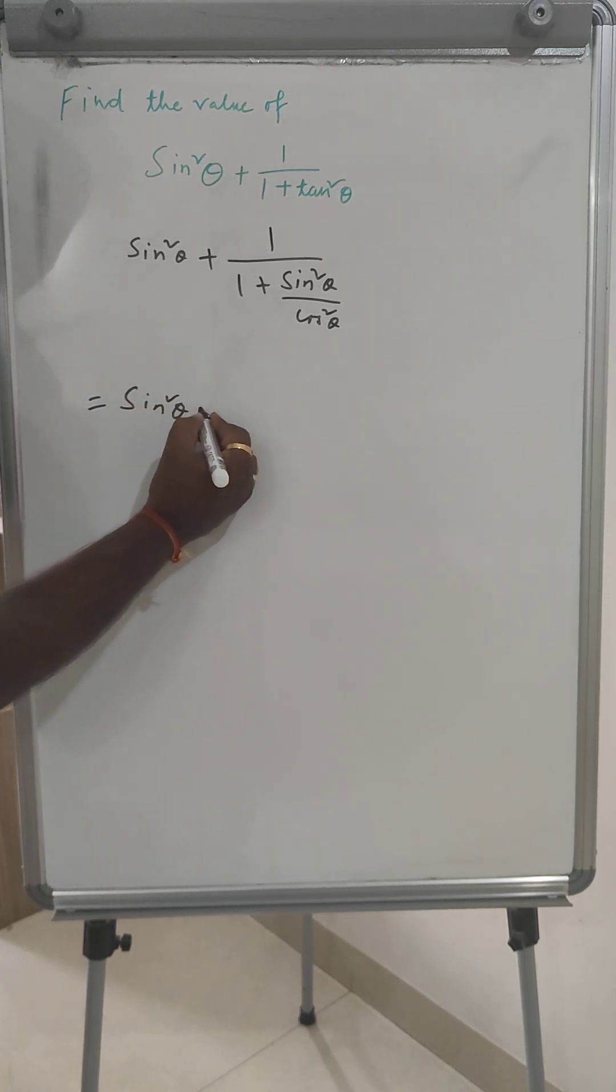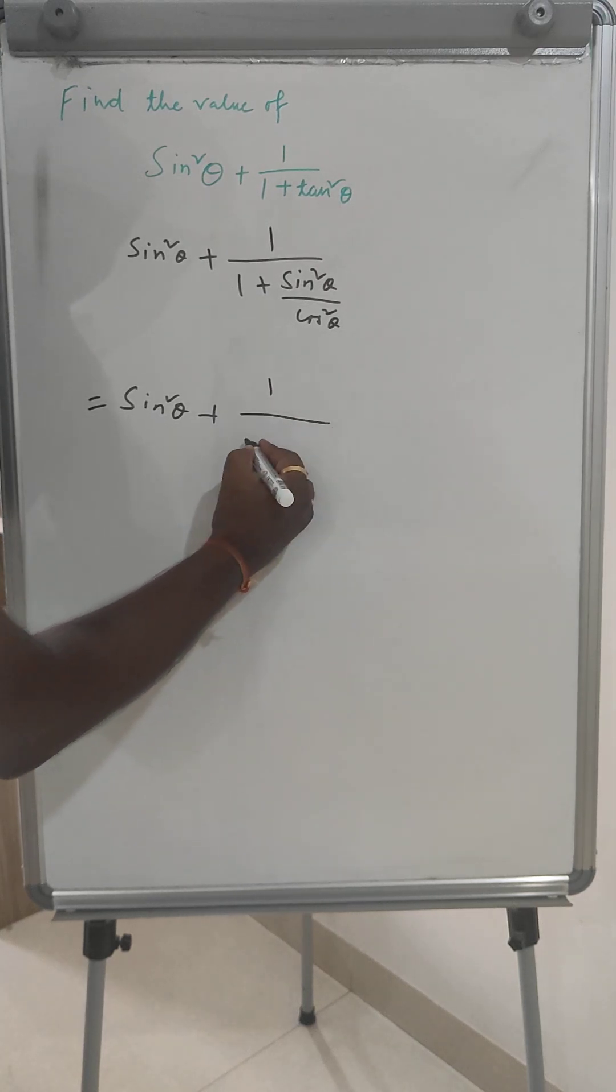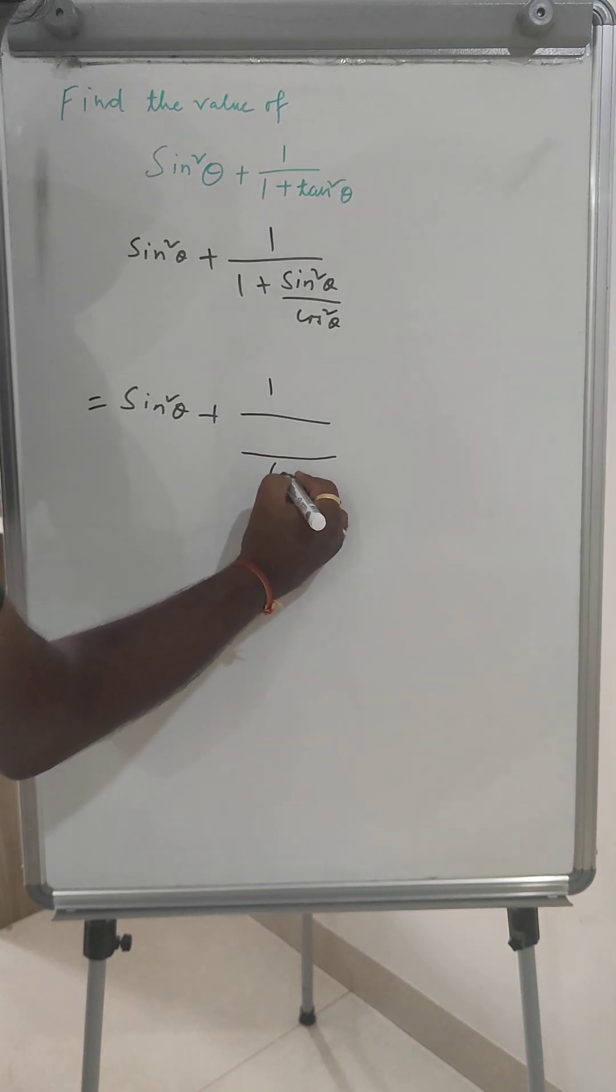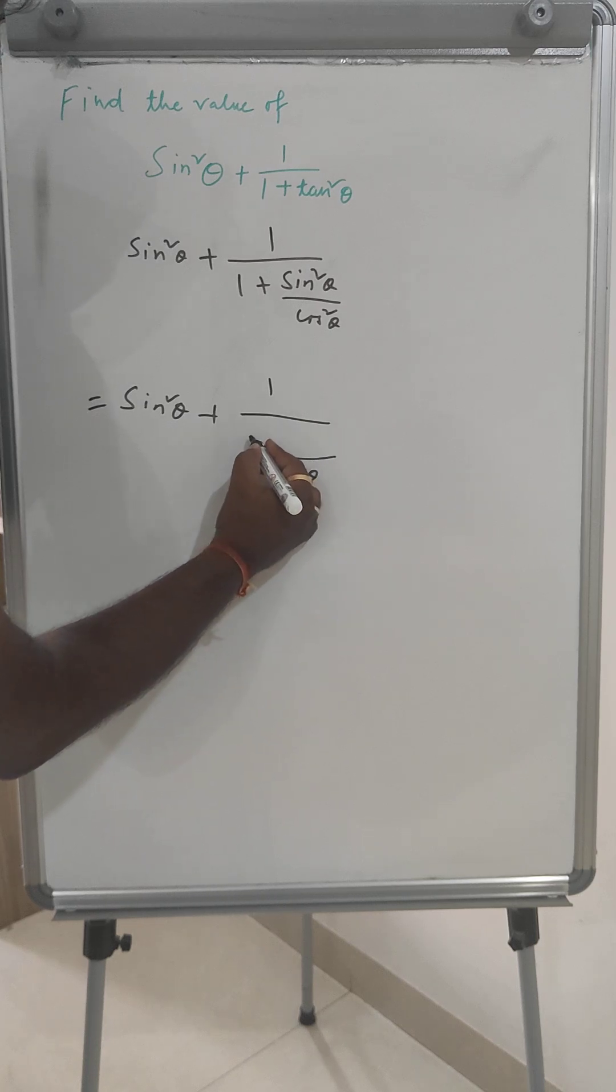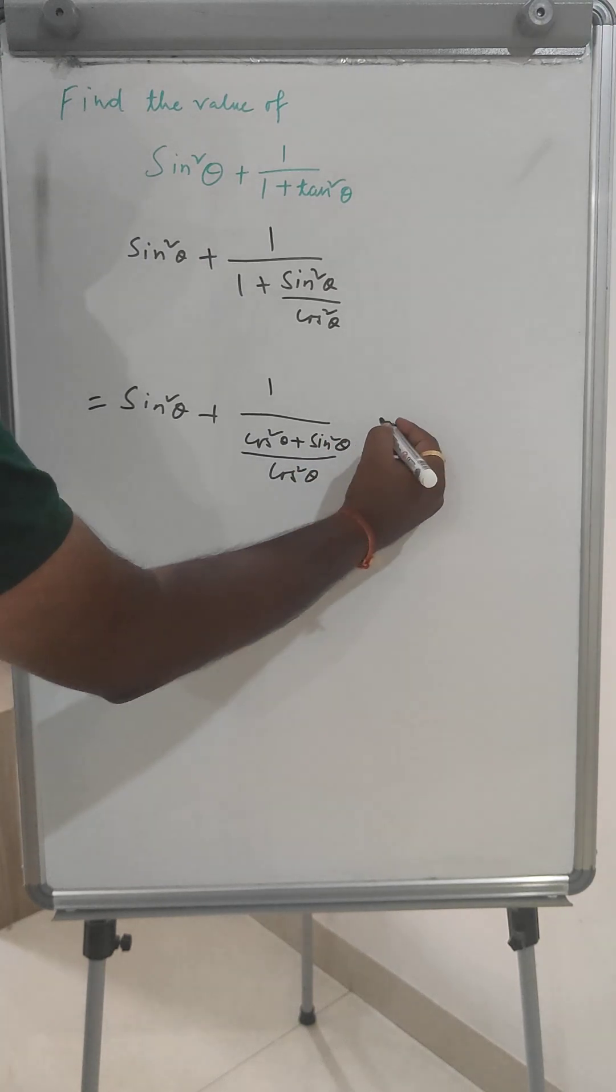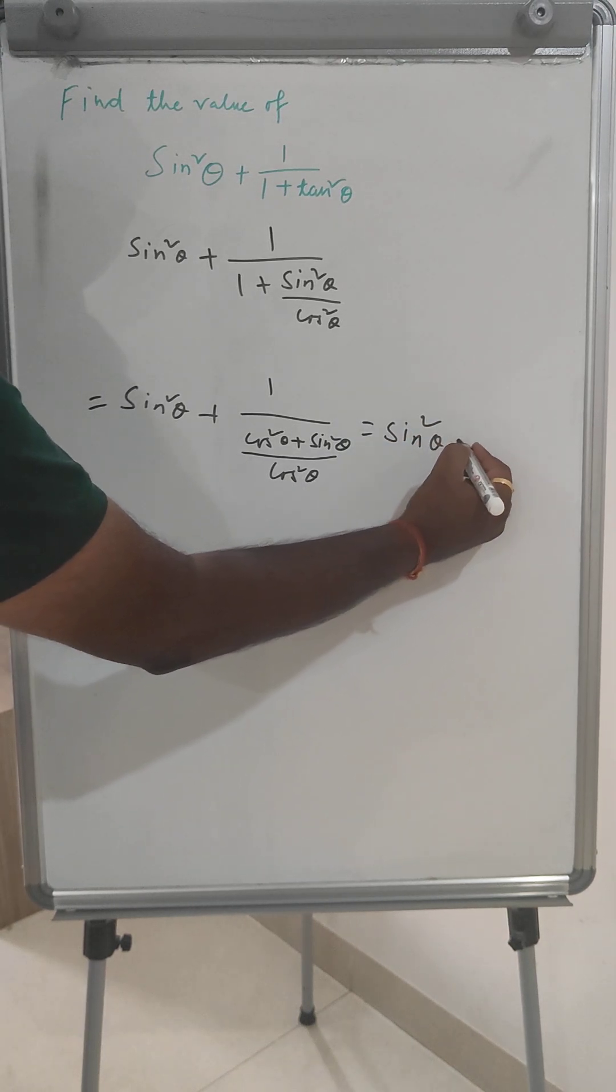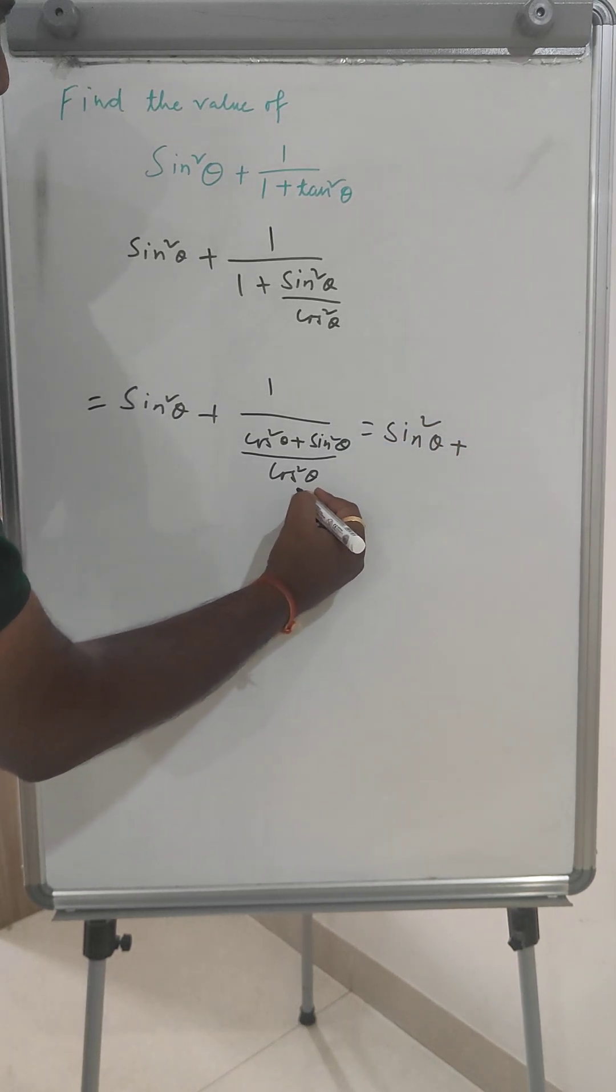Sin²θ plus this 1 by cos²θ, and here cos²θ plus sin²θ. We can write sin²θ and this 1 will go up.